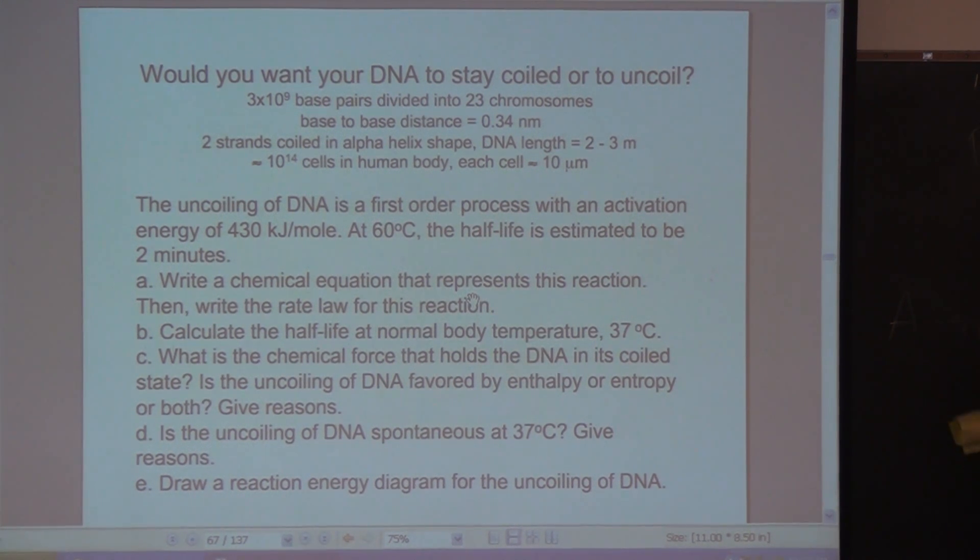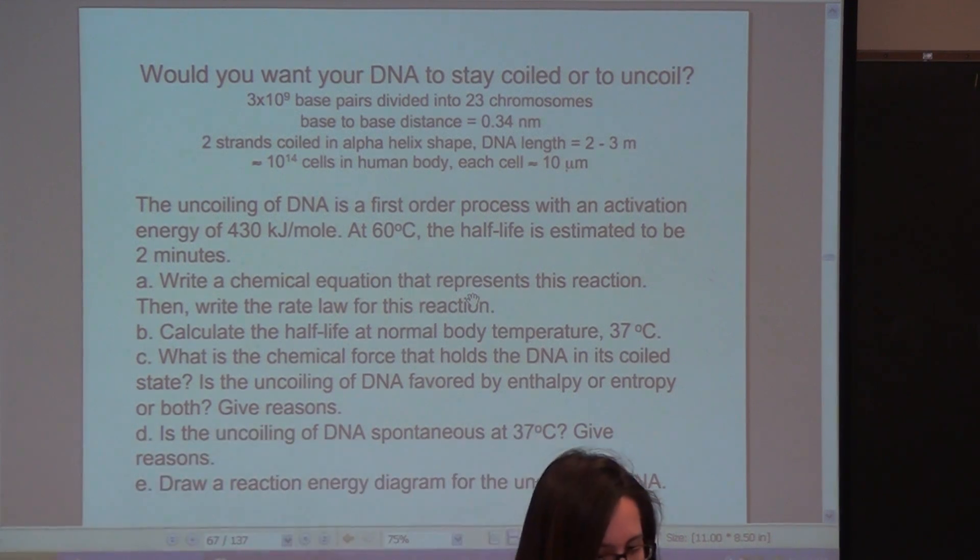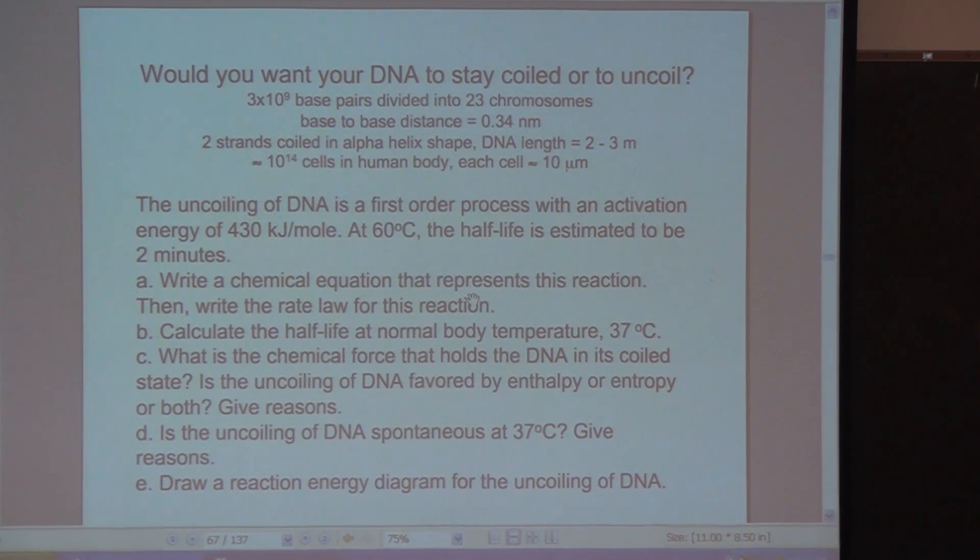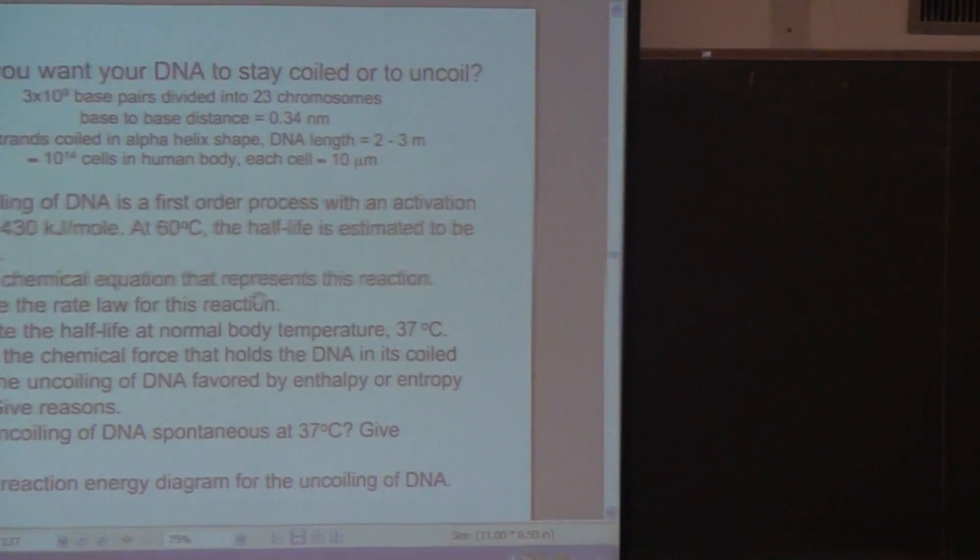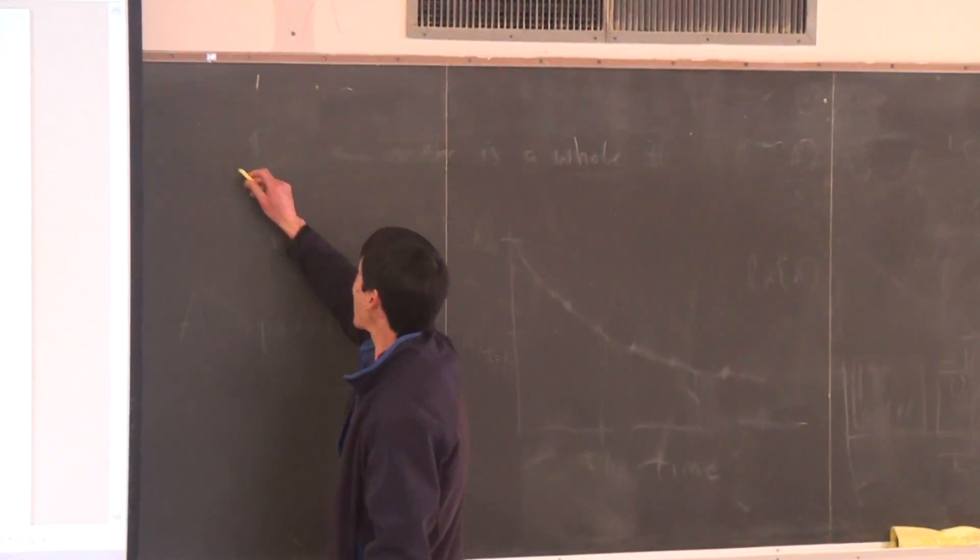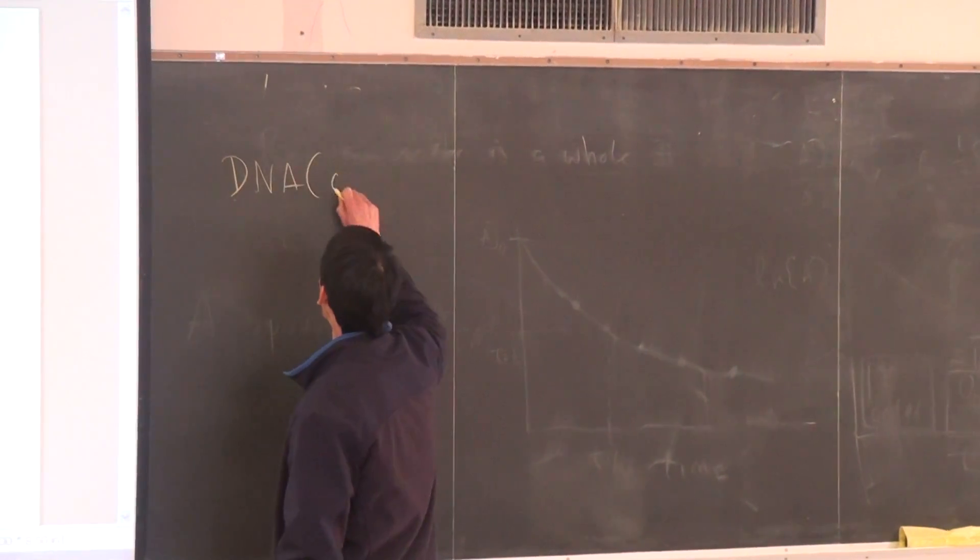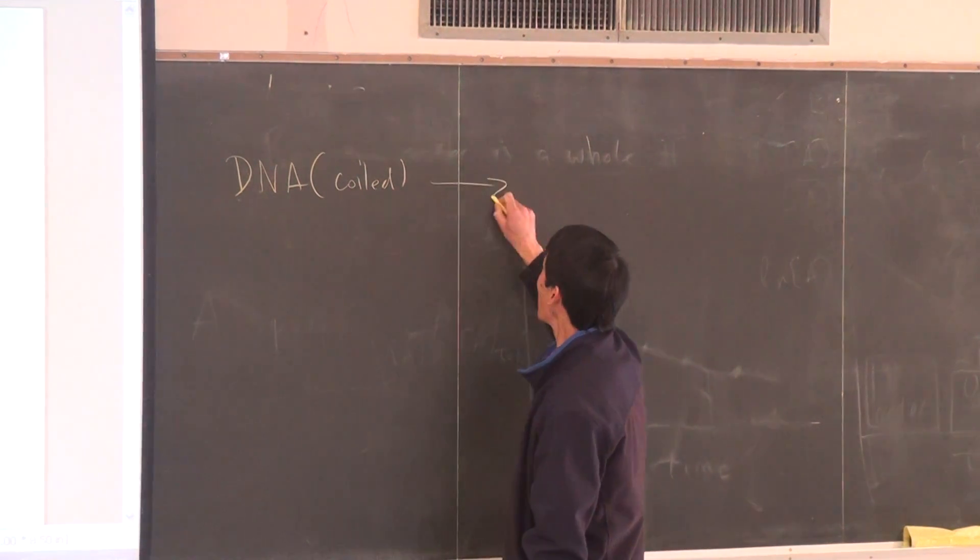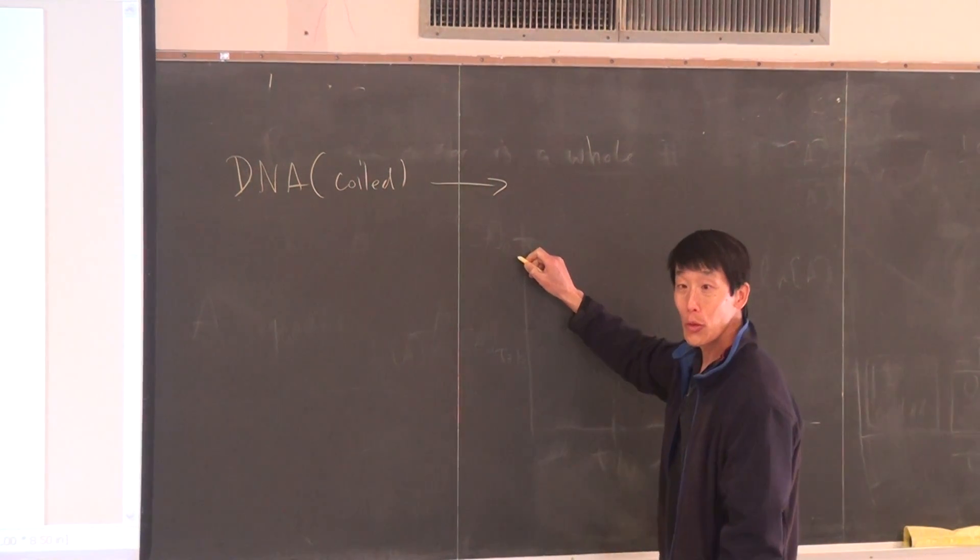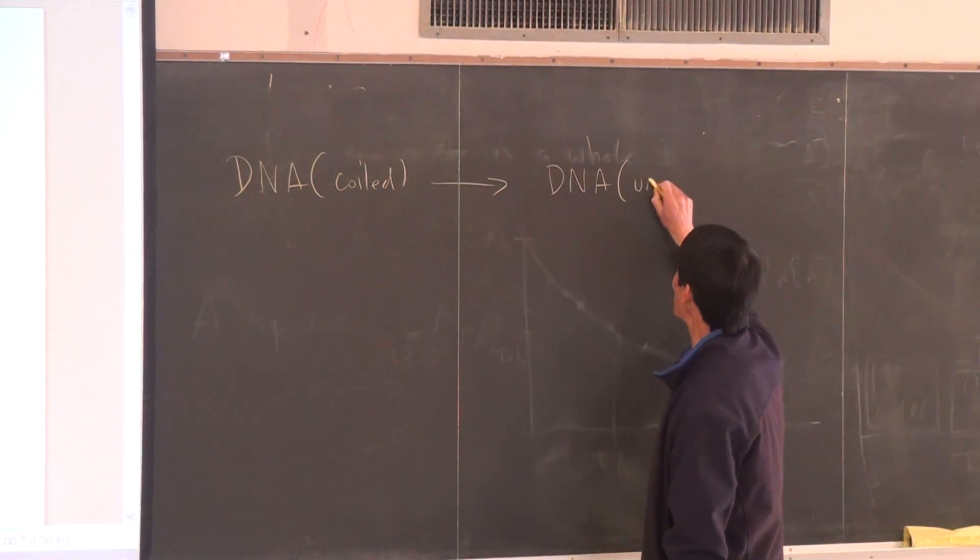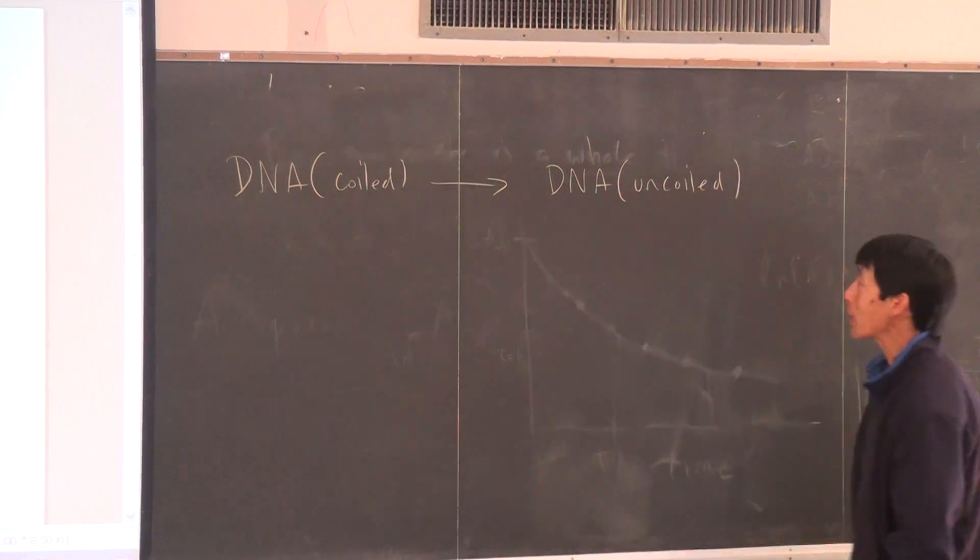Now note again that this reaction represents the uncoiling of DNA. So an easy way to represent this reaction would be to do with this one. We have DNA coiled, this is the coiled state, and then it's going to DNA uncoiled. So this is an easy way to represent this reaction.